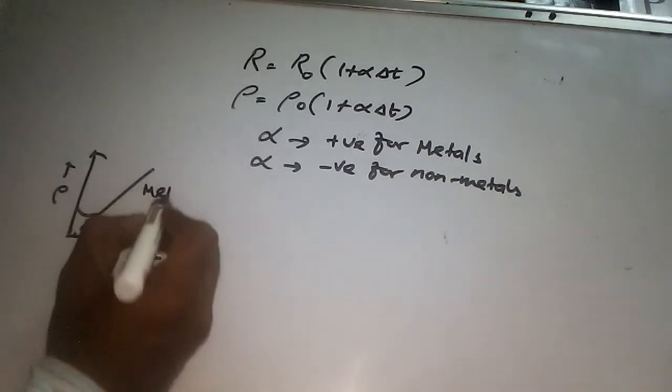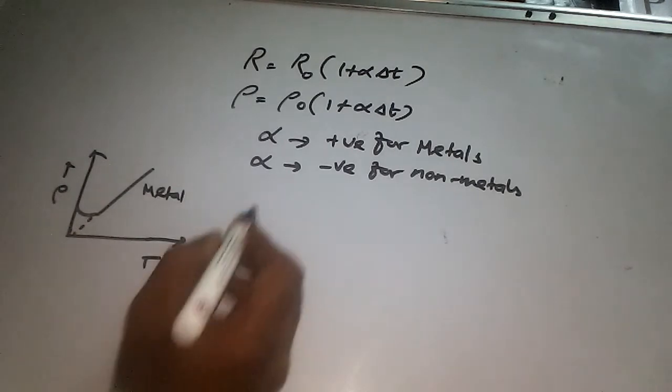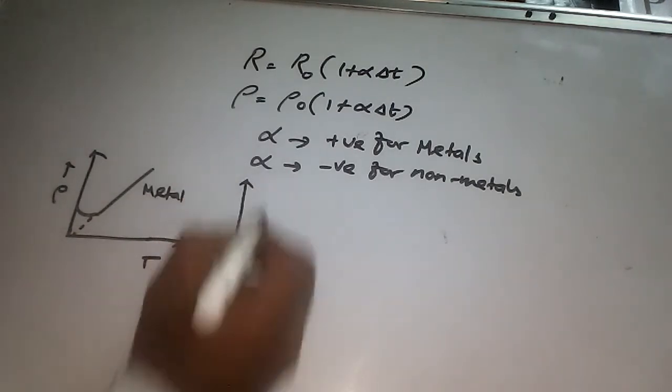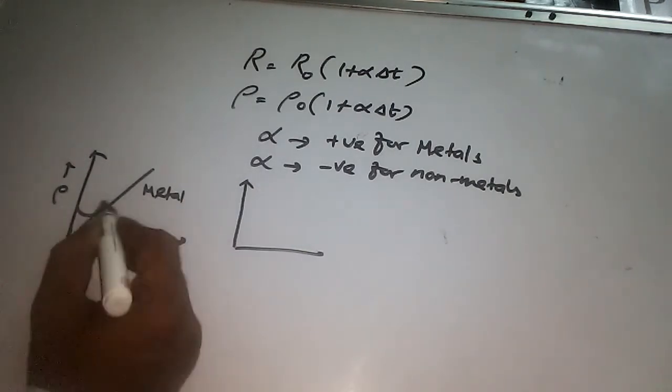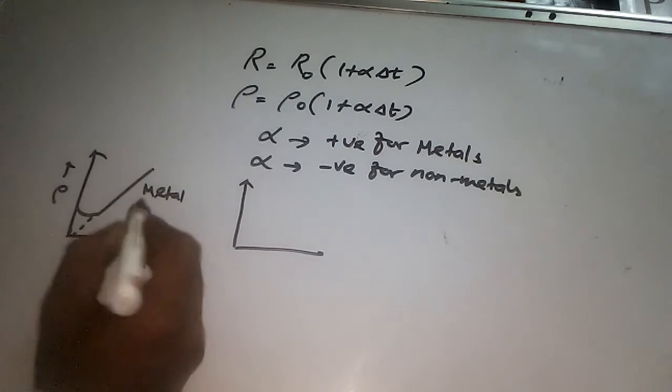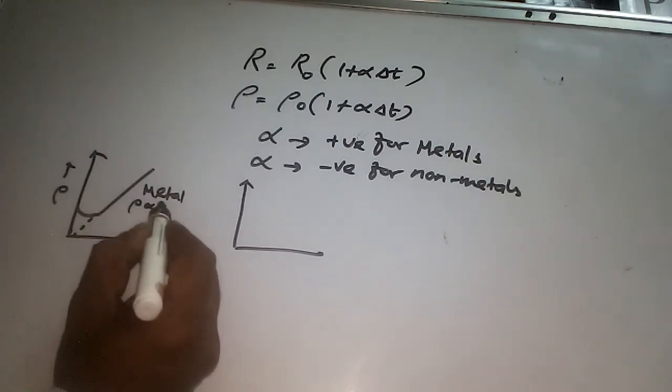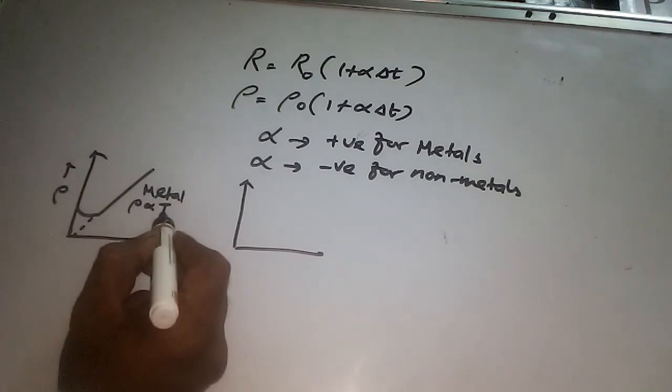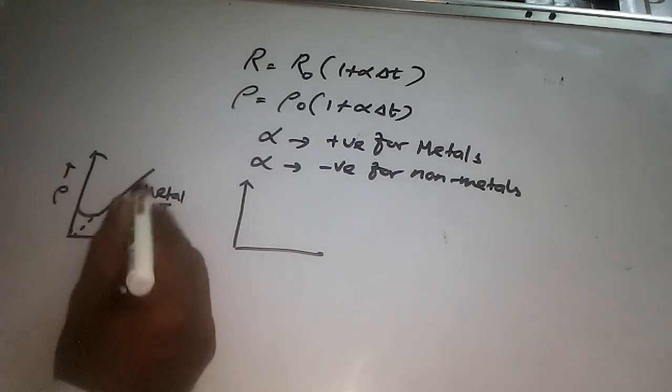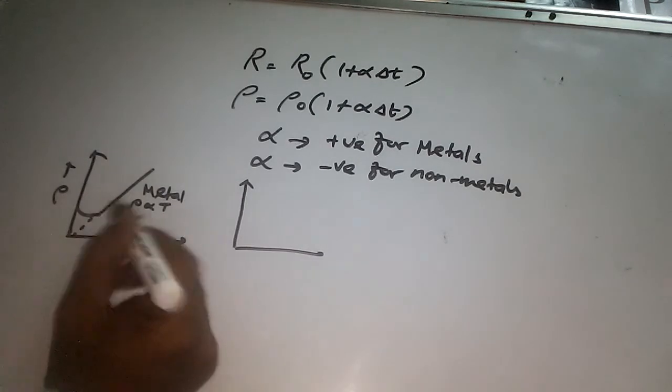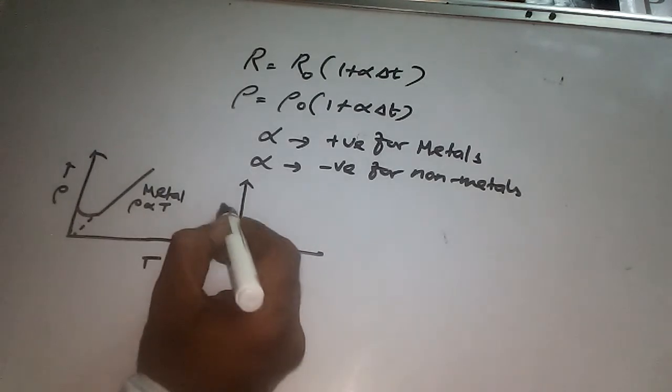This is for metal. This straight line portion indicates that resistivity increases as temperature increases for this straight line portion. For semiconductors, rho is along the v-axis and temperature along the x-axis.